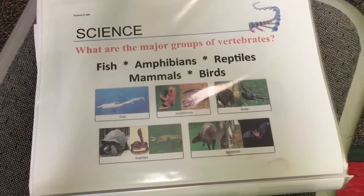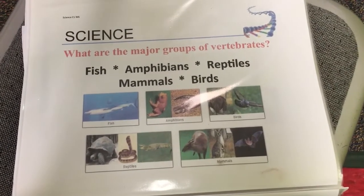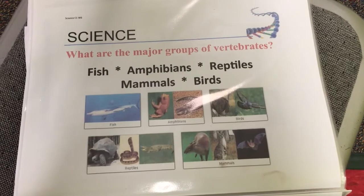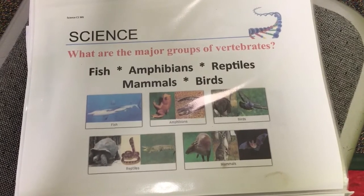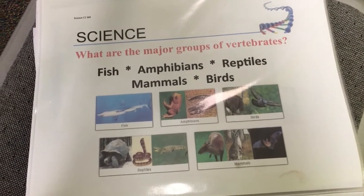Week 6, science. What are the major groups of vertebrates? Fish, amphibians, reptiles, mammals, birds.